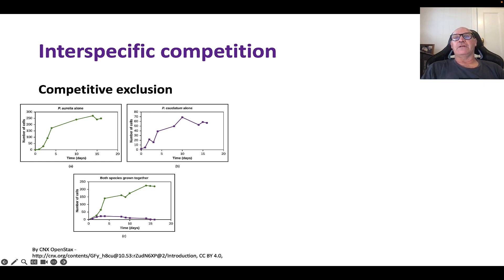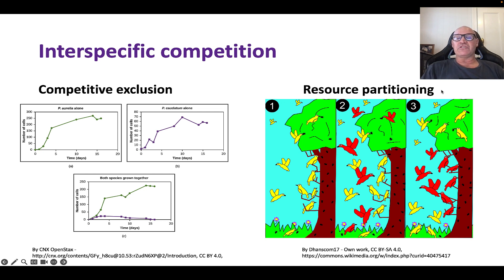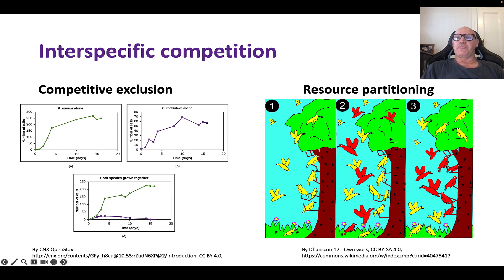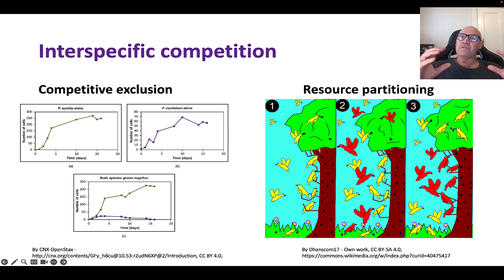We also see a gentler arrangement called resource partitioning, which is more about sharing. One species alone can eat bugs all the way through a tree ecosystem, but when it has to share with red birds that are bigger and more dominant, the red birds occupy the spot they prefer and are best adapted to. The yellow birds can't compete as well for that middle area, so they move to the edges — sharing the ecosystem by dividing the resources.